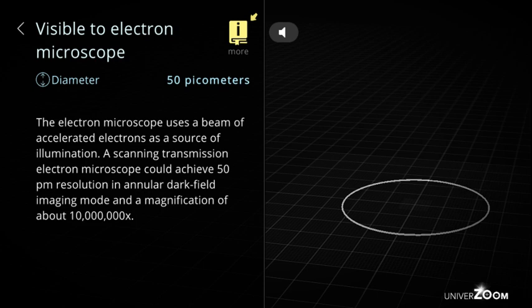Visible to electron microscope, diameter: 50 picometers. The electron microscope uses a beam of accelerated electrons as a source of illumination. A scanning transmission electron microscope could achieve 50 picometer resolution in annular dark field imaging mode and a magnification of about 10 million times.